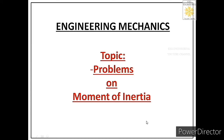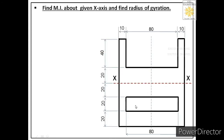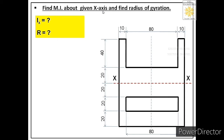Welcome students. Today we will solve the eighth problem on moment of inertia. We are given one composite area and we are asked to find its moment of inertia about a given x-axis, which is 60 millimeters from the bottom edge of this composite area. Along with that, we are asked to find its radius of gyration. So we need to find two things: Ix and r, the radius of gyration.